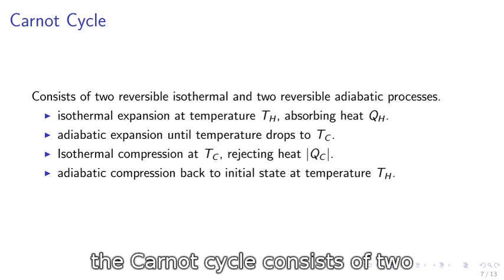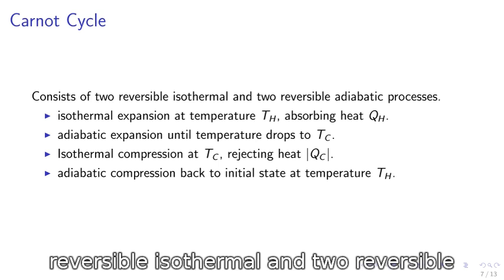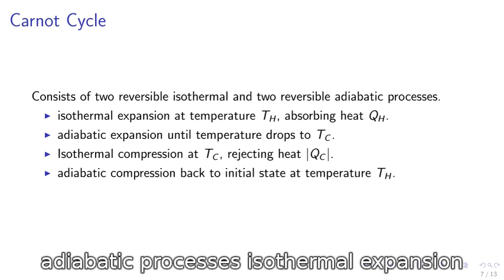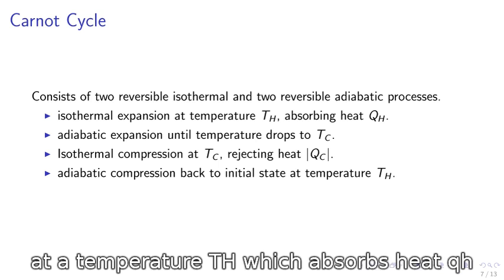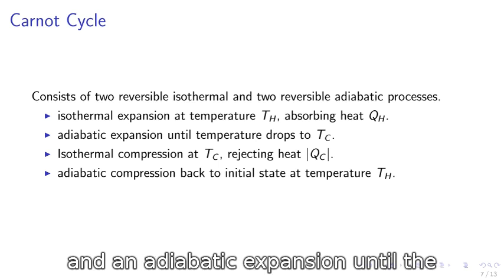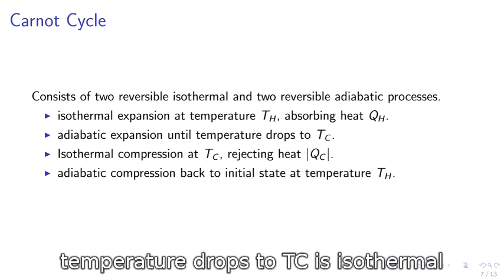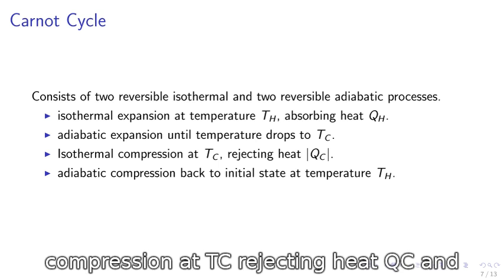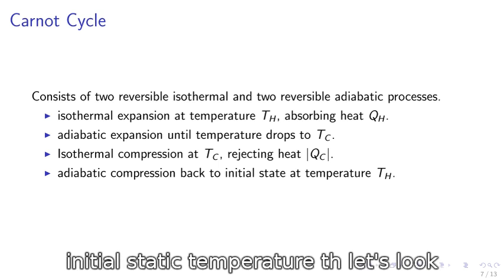The Carnot cycle consists of two reversible isothermal and two reversible adiabatic processes. The isothermal expansion at temperature TH which absorbs heat QH. There is an adiabatic expansion until the temperature drops to TC. There is an isothermal compression at TC rejecting heat QC, and an adiabatic compression back to the initial state of temperature TH.